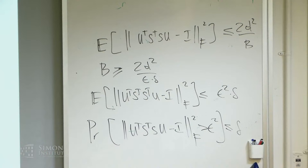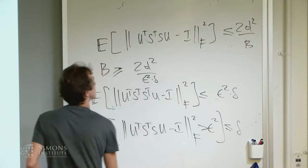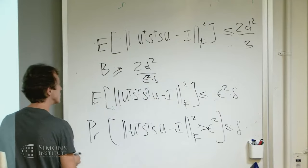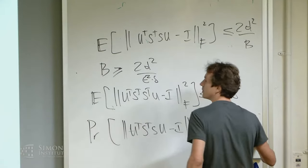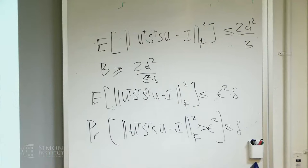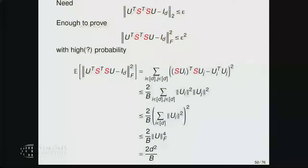There's a typo noted: B should be 2D²/(ε²δ), not 2D²/(εδ). And the spectral norm is then at most ε with probability 1 minus δ, since spectral norm is bounded by Frobenius norm.